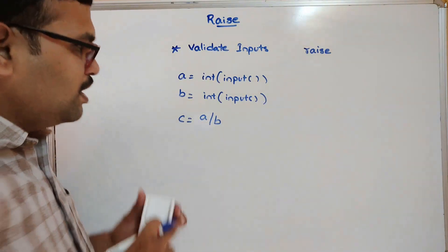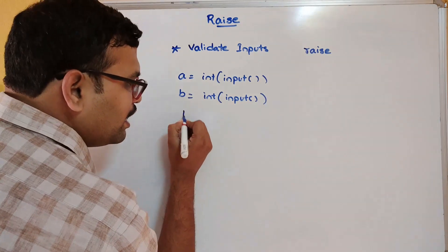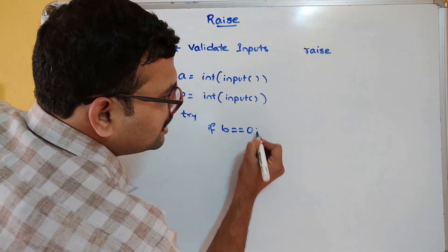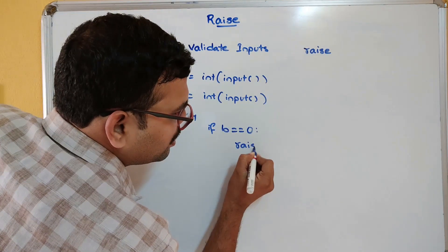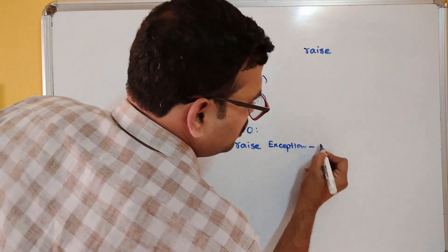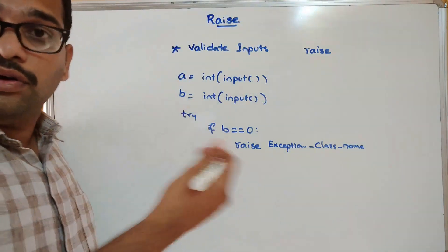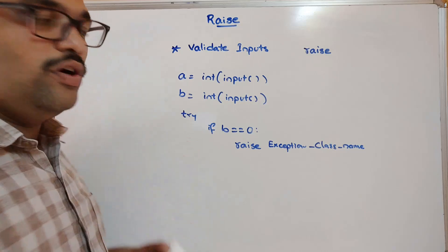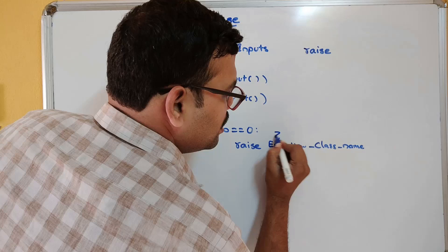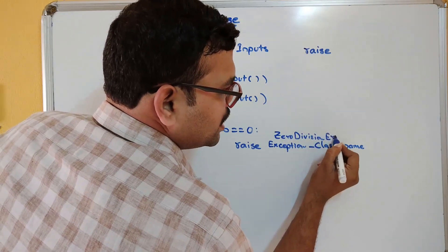Before executing c = a / b, we can directly check: if b == 0, we use `raise` followed by the exception class name. So here, in place of the exception class name, we write ZeroDivisionError. This is how we can raise a specific exception type.